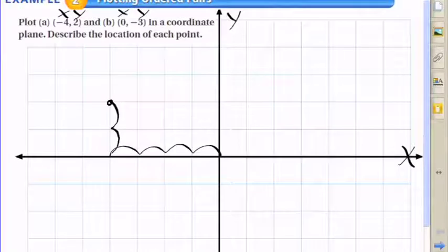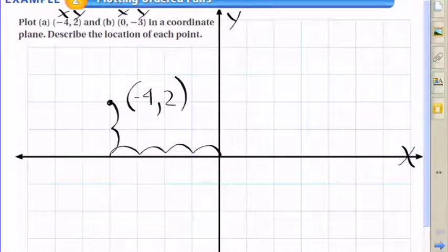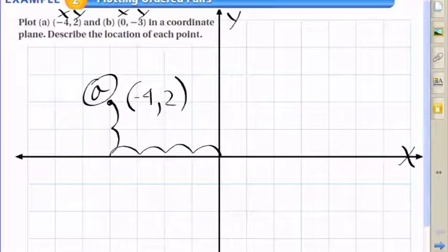Your y-axis runs vertically, x horizontally. You start at the origin and count four spaces to the left because it's -4 for x, then go up two because it's positive for y. There's point A.